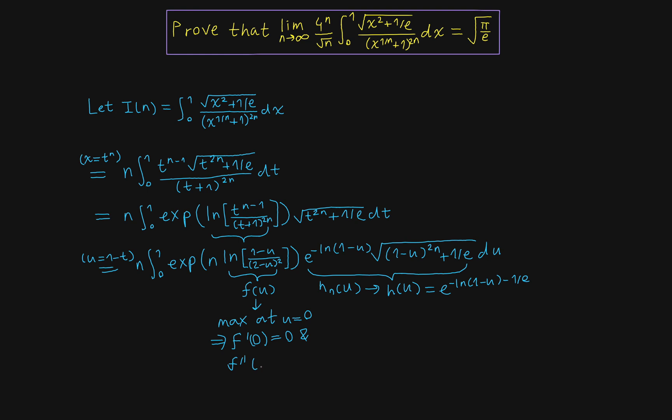And the second derivative, f double prime, should be less than 0, concave down, right? Also, this is important here to notice. This is why I left it in the exponential here. This is also greater than 0 for u greater than or equal to 0.